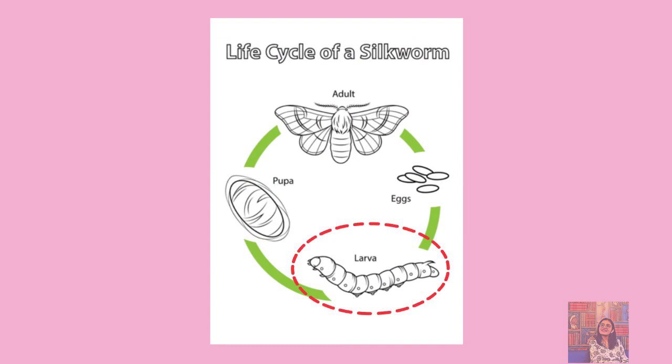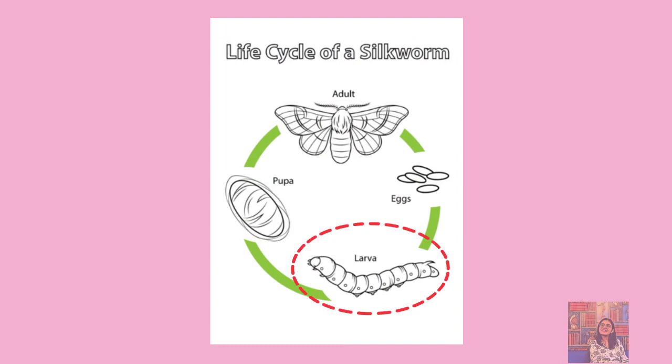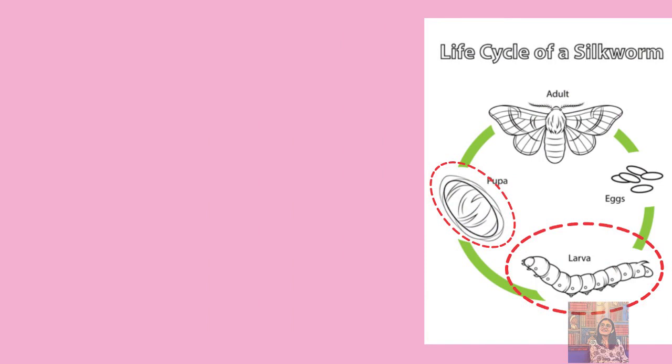This caterpillar produces silk to form a cocoon and then it gets converted into an adult male or female. But before we use this cocoon to obtain silk, let's understand the process.